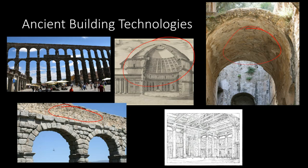A dome, remember, is like an arch that's been spun into a room shape. A vault is a long, narrow arch turned into a hallway. We also saw wooden roof trusses, which were an improvement on the post and lintel roofs that the Greeks and Etruscans had been using. So the Romans made quite a few innovations, not only in their materials but also in their forms.